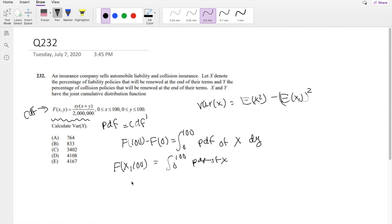We just plug in 100 for x. So then we get 100x plus x plus 100, divided by 2 million. So this is also equal to 100x squared plus 10,000x over 2 million. I think it's easiest for us to split it into two.